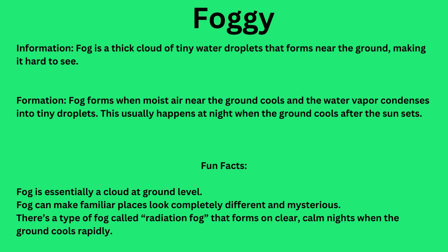Foggy. Fog is a thick cloud of tiny water droplets that forms near the ground, making it hard to see. Fog forms when moist air near the ground cools and the water vapor condenses into tiny droplets. This usually happens at night when the ground cools after the sun sets.